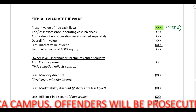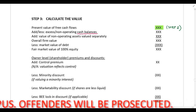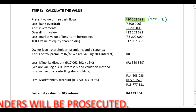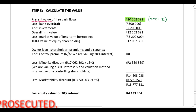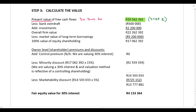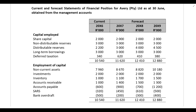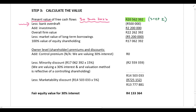Next we need to add or deduct any excess or non-operating cash balances. Please be careful with dates here — this is the present value of your future cash flows, so this is the value at the 30th of June 20x6. You're going to take into account the cash balance at the 30th of June 20x6. In our example, the company has a bank overdraft of 500,000 rand, so we are deducting the bank overdraft. If the company had a positive cash balance, you would obviously add that to the present value of your free cash flows.